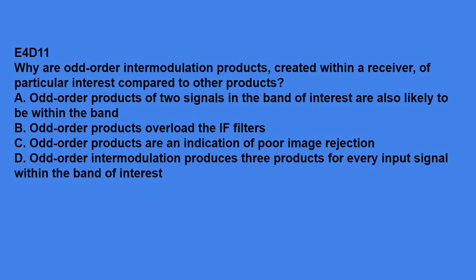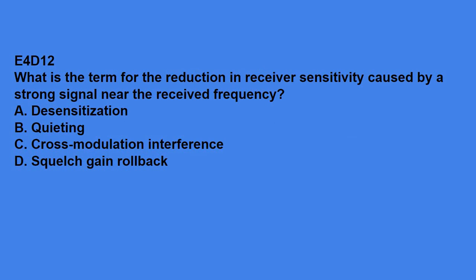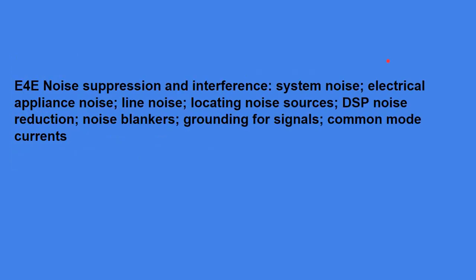E4D11, why are odd-order intermodulation products created within a receiver of particular interest compared to other products? Odd-order products of two signals in the band of interest are also likely to be within the band. E4D12, what is the term for the reduction in receiver sensitivity caused by strong signal near the received frequency? It's called desensitization. E4E says, is about noise suppression and interference, system noise, electrical appliance noise, line noise, locating noise sources, DSP noise reduction, noise blankers, grounding in RF signals, and common mode currents.